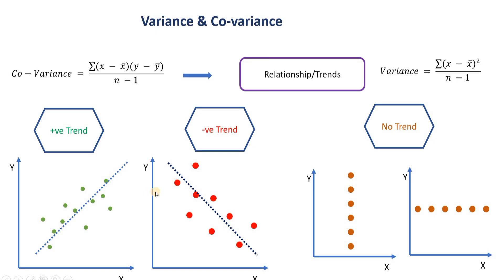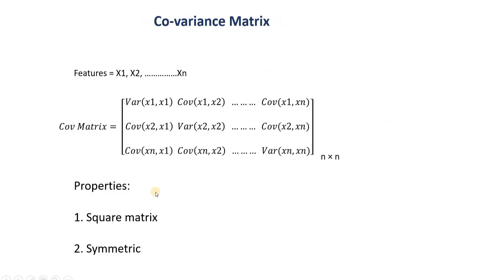If the x value remains constant, then (x minus x-bar) equals zero, so the covariance value will be zero — meaning no trend. Similarly if y is constant, the covariance is zero. Importantly, covariance does not tell us the slope of the data or how far the data points are from the line — it simply tells us whether the trend is positive, negative, or nonexistent.